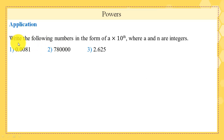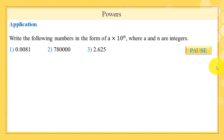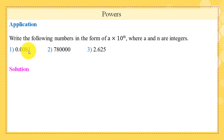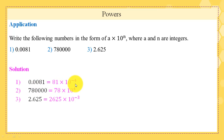This is an application: write the following numbers in the form a times 10^n, where a and n are integers. Please pause the video and try to solve this application. Solution: 0.0081 — here 81 is an integer and we have four numbers after the decimal point, so 0.0081 equals 81 times 10 to the power minus 4.